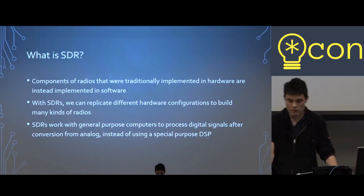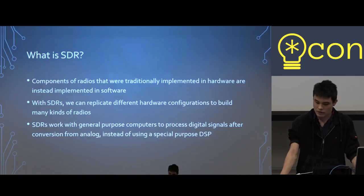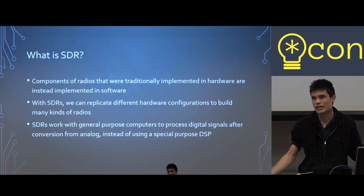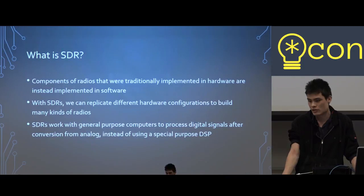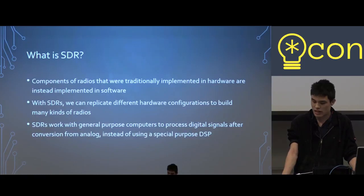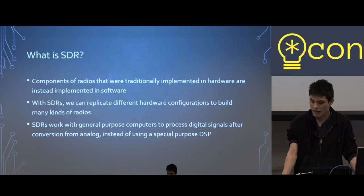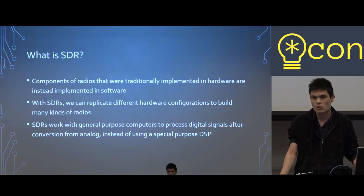With software-defined radios, we can replicate different hardware configurations to build many different kinds of radios. For example, if you had an AM radio, you couldn't use it to listen to an FM broadcast — you'd hear alien sounds. Similarly, if you had a packet radio, you couldn't use it to pick up AM or FM broadcasts. SDRs work with general-purpose computers to process digital signals after their conversion from analog. Simply put, with a software-defined radio we sample raw, unprocessed information about radio waves at a fast enough rate to be useful. The PC then transforms that raw information into whatever form we need, whether it's audio, TV, Morse code, or digital packets.